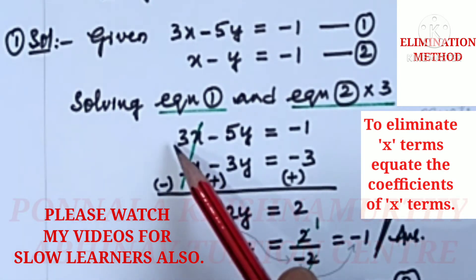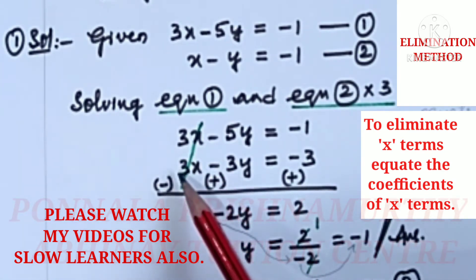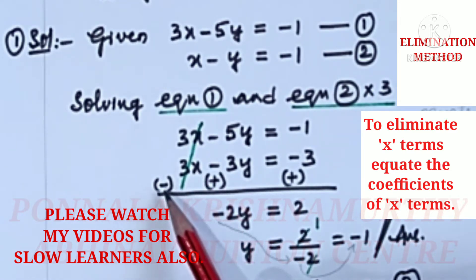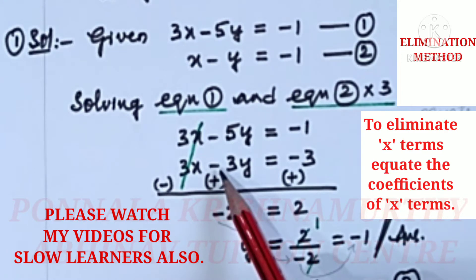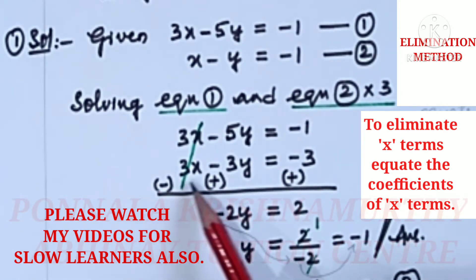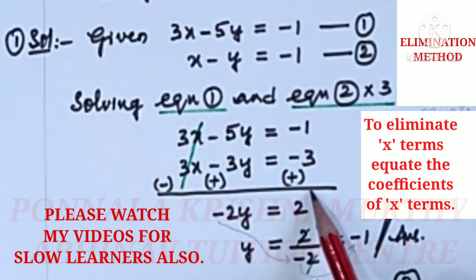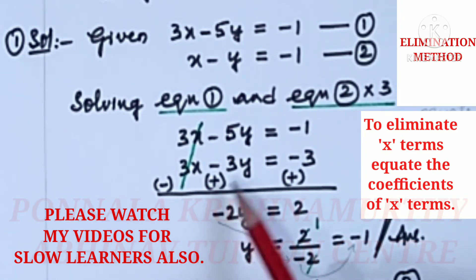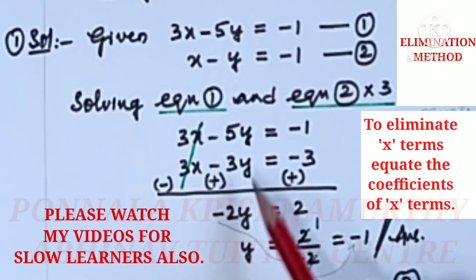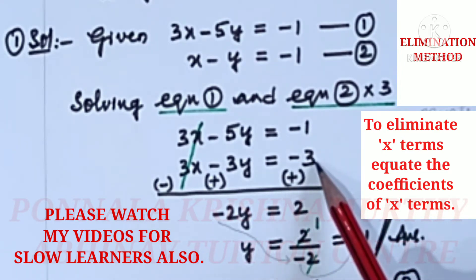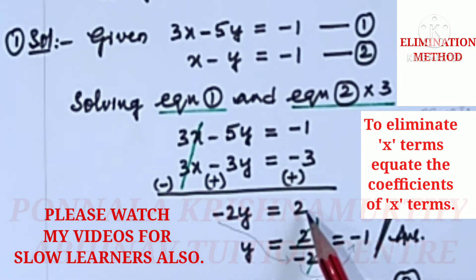Since we have plus 3x and plus 3x, we cannot cancel. So we change the signs of equation 2: it becomes minus 3x plus 3y plus 3. All the signs must be changed. Now these two 3x terms cancel. Minus 5y plus 3y gives minus 2y. Different sign, subtraction, bigger number sign. Here minus 1, but this is now plus 3, not minus 3.